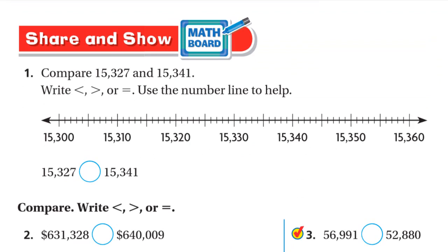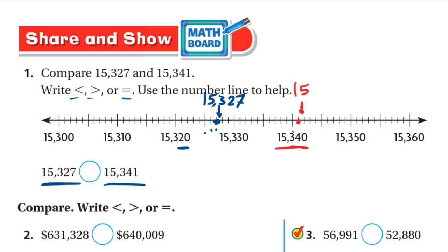Share and Show: Compare 15,327 and 15,341 — write less than, more than, or equal. Use the number line to help. On the number line: 15,327 is located here, and 15,341 is at 15,340 then 15,341. Since the number on the left is less than the number on the right, 15,327 is less than 15,341.